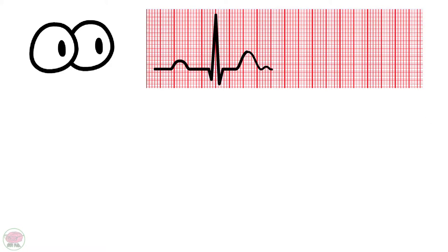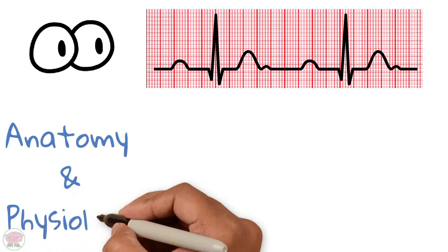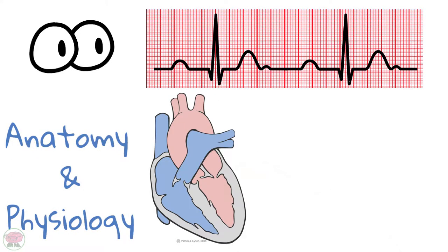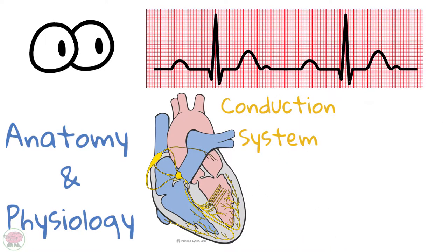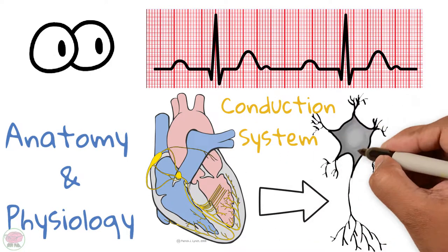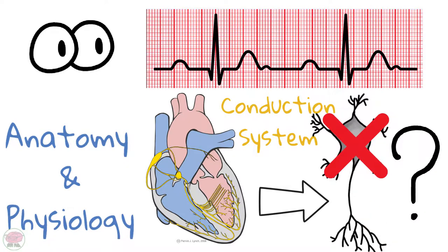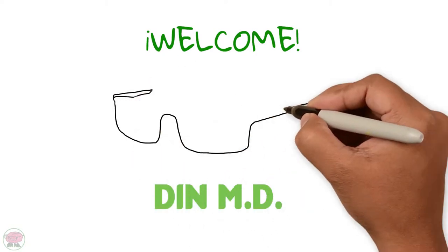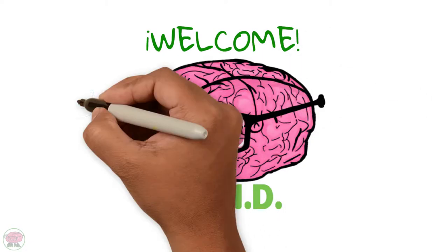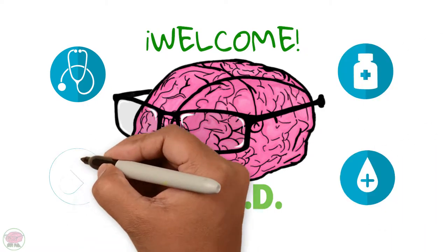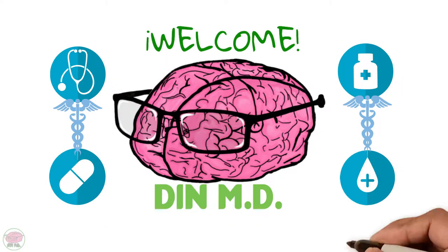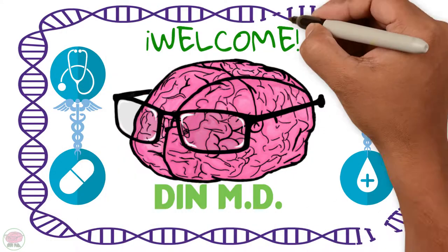To fully understand and correctly read an electrocardiogram, you need to master the anatomy and physiology of the heart. That's why in this video we're going to talk about the anatomy of the heart's conduction system — which, as you know, is made up of nervous tissue, right? Wrong! Welcome to Dean MD, where you can learn everything related to the basic sciences of medical knowledge and apply it to patient care.